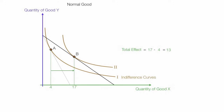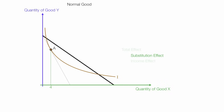I should probably label these indifference curves 1 and 2. Now, I'm going to break the total effect into two parts: the substitution effect and the income effect. To do this, I'm going to take the new budget line after the price decrease and bring it back parallel until it's just tangent to the first indifference curve. I'm going to move down the indifference curve to the point where it's tangent, and I'm going to label that C. At that point, the consumer consumes 10 units of X. So the substitution effect is 10 minus 4, and I'll label that S.